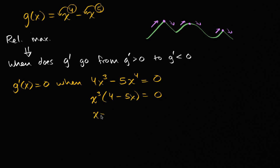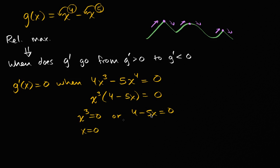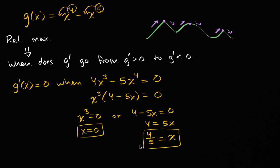This is going to happen when x to the third equals zero, or four minus five x equals zero. For x to the third equaling zero, that's only when x equals zero. For four minus five x equaling zero, add five x to both sides: four equals five x, divide both sides by five, giving x equals four fifths. Those are the two places where our derivative equals zero. Our function is a polynomial, so the derivative is defined for all real numbers — giving us our two critical points.